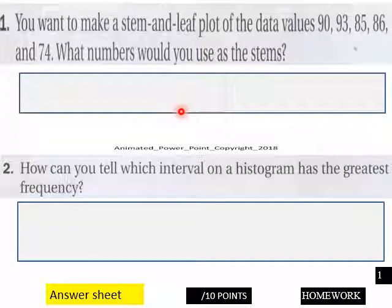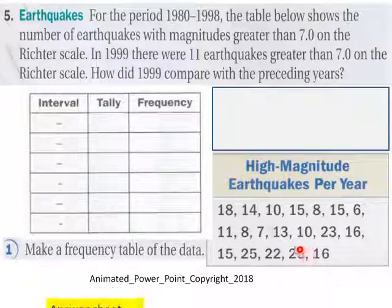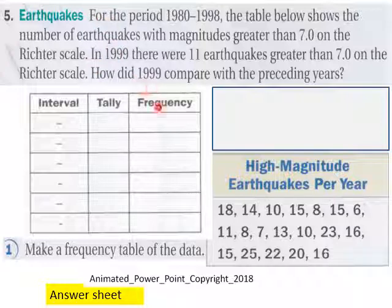Okay, 10 points here for page one. Page two, we have a word problem here about earthquakes. You need to make a frequency table here and then answer: how did 1999 compare with the preceding years, 1990 through 1998? The table shows and then here is your high magnitude earthquakes per year.